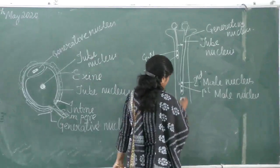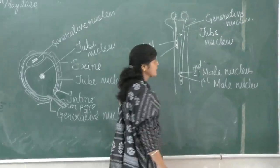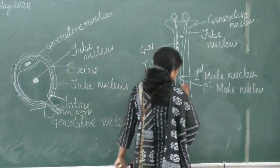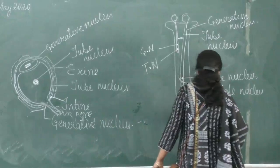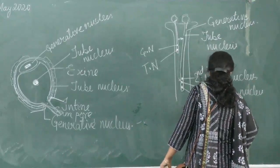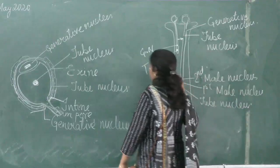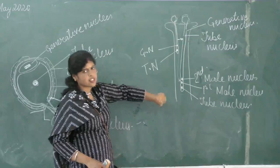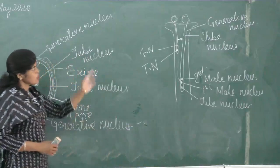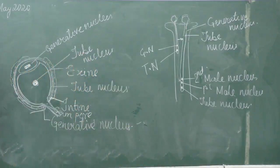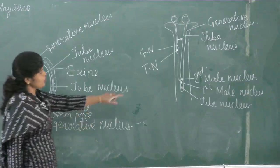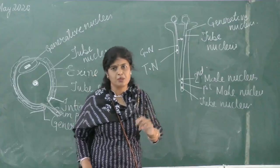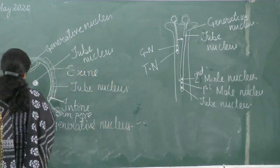Two male nuclei are formed — you can call them male gametes also. This is the tube nucleus, and it keeps elongating until it reaches into the ovary. That is the male part. Now we come to the female part.